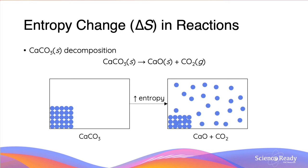Let us consider the entropy of a reaction. The decomposition of calcium carbonate forms a solid, calcium oxide, and a gas, carbon dioxide. Here we have a diagram which shows what is occurring. Because the solid is turning into a gas, the entropy is ultimately going to be increasing.